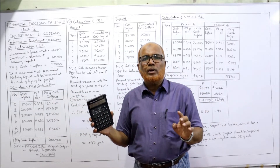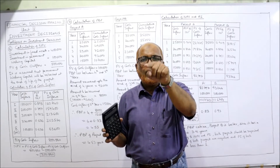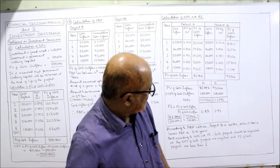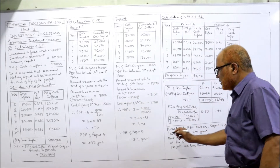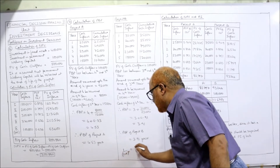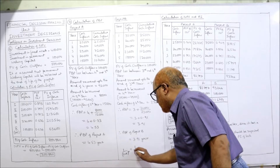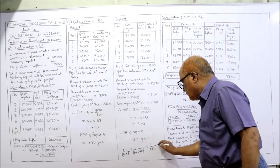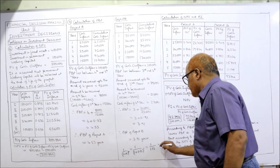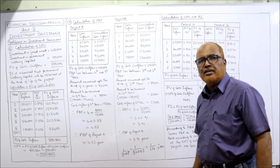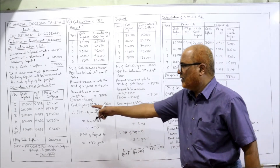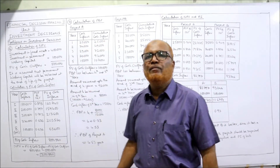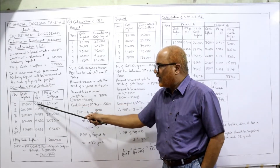Press equals again to get 0.712 for the third year, and again for 0.636 for the fourth year. The formula is 1 divided by (1 + r)^n, which is 1 divided by (1 + 0.12)^1 = 1 divided by 1.12 = 0.893. After getting 0.893, just press equals repeatedly to get subsequent year values. Now multiply cash inflow with PV factor to get PV of cash flow.